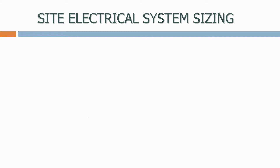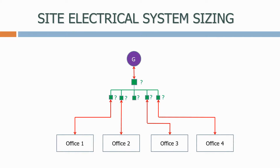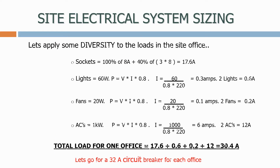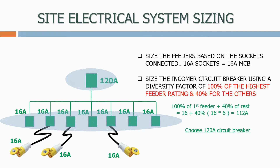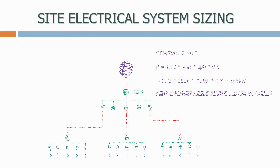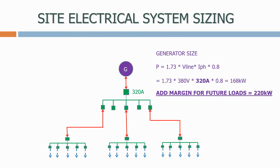In the next section, we look at how we size an electrical system, starting off with the circuit breakers. We provide a simple methodology for sizing the circuit breakers to feed a typical site office, and also introduce the principle of electrical diversity. We then go on to size the circuit breakers in a main distribution system, before finally looking at how we size a generator.